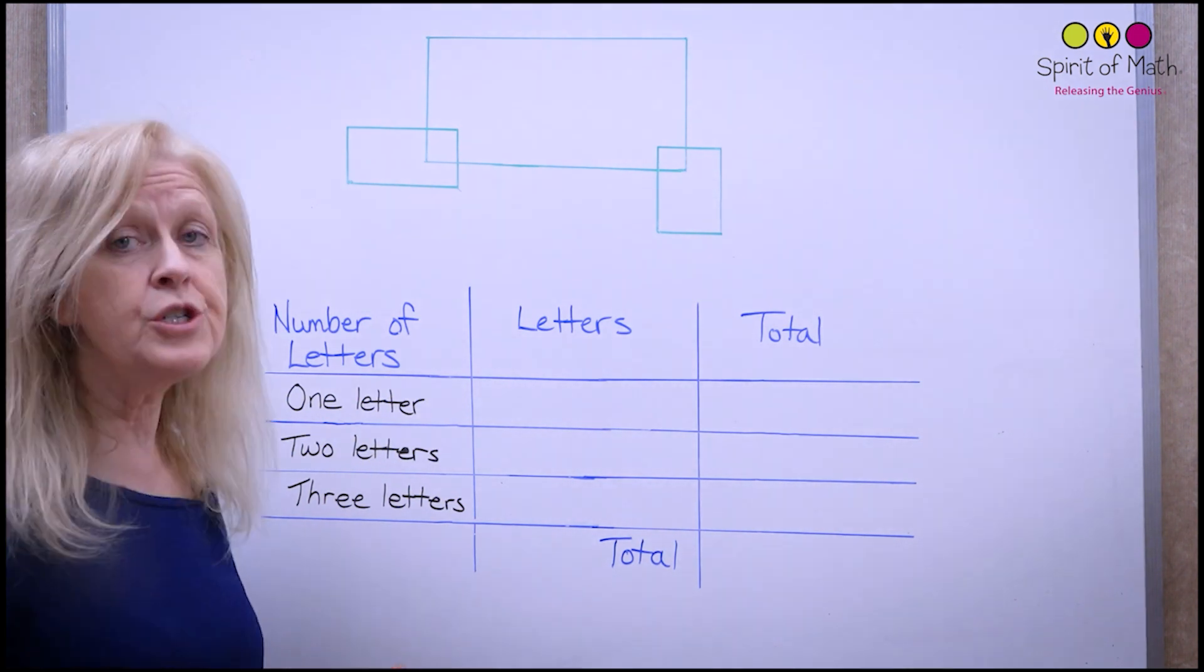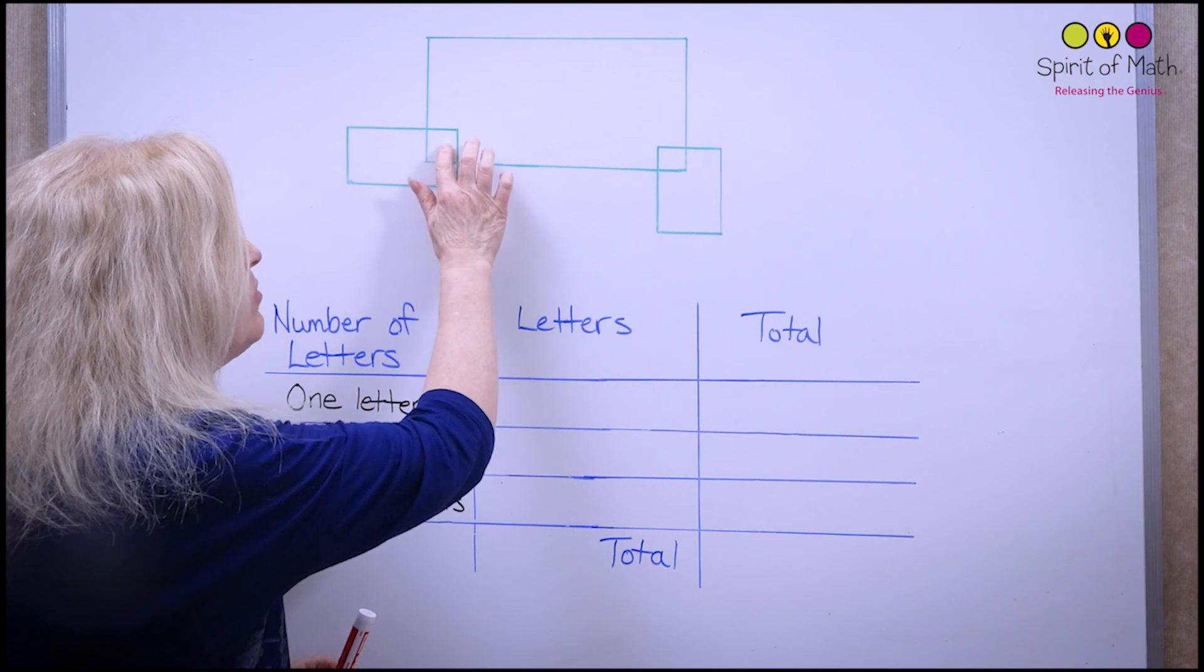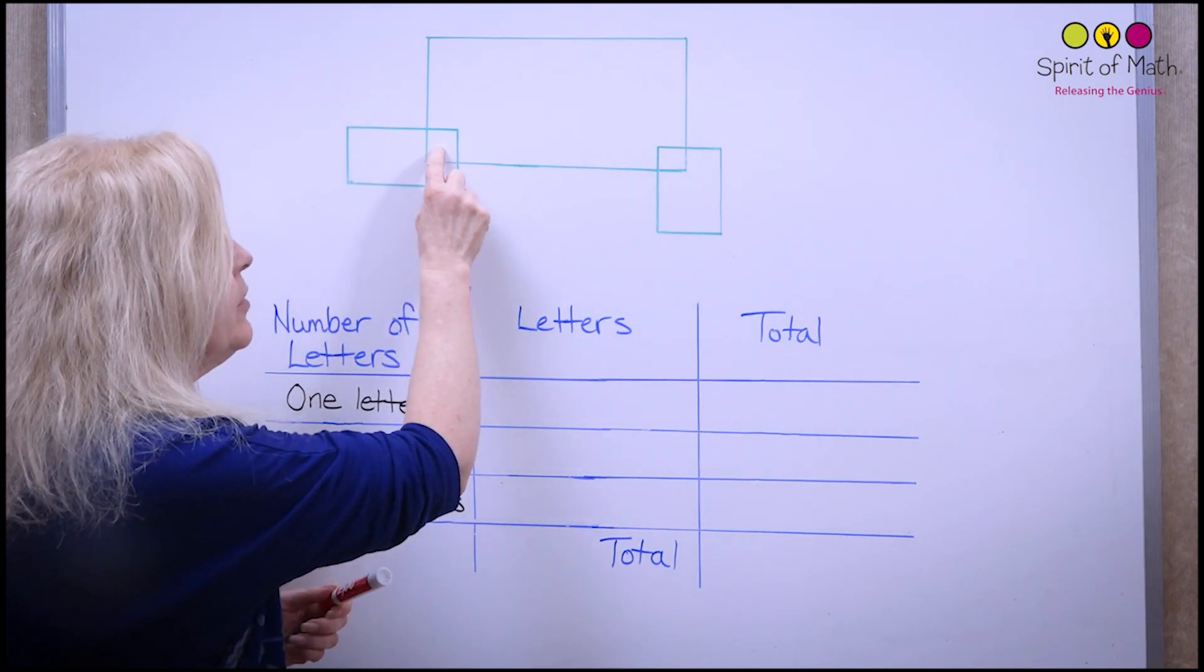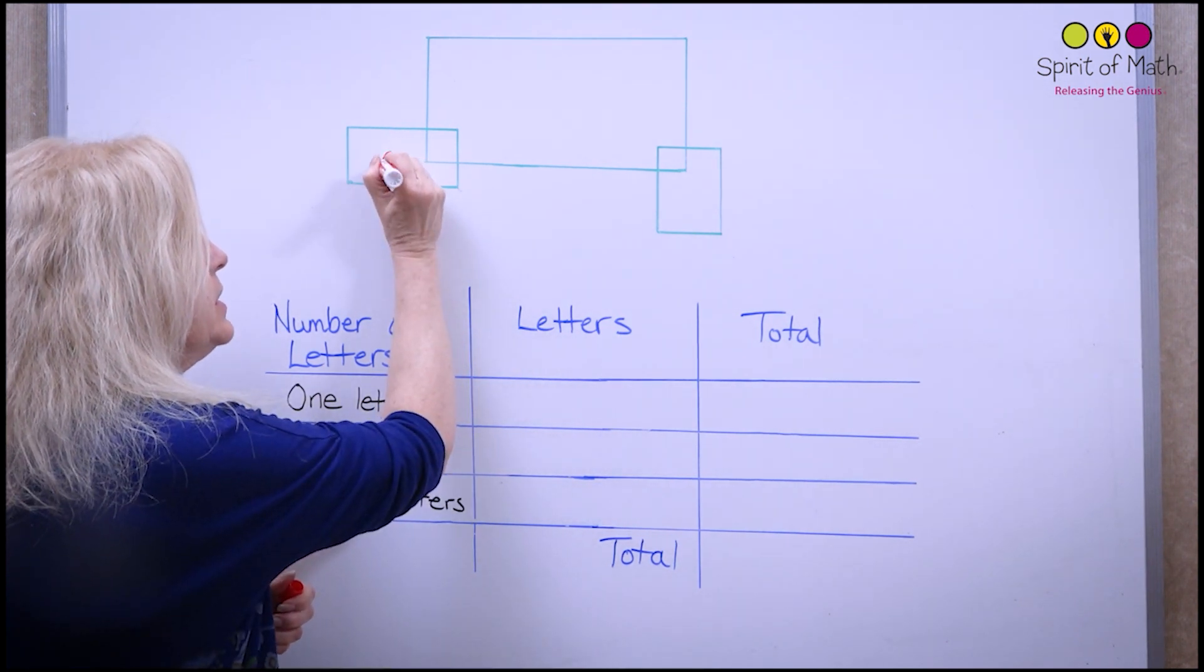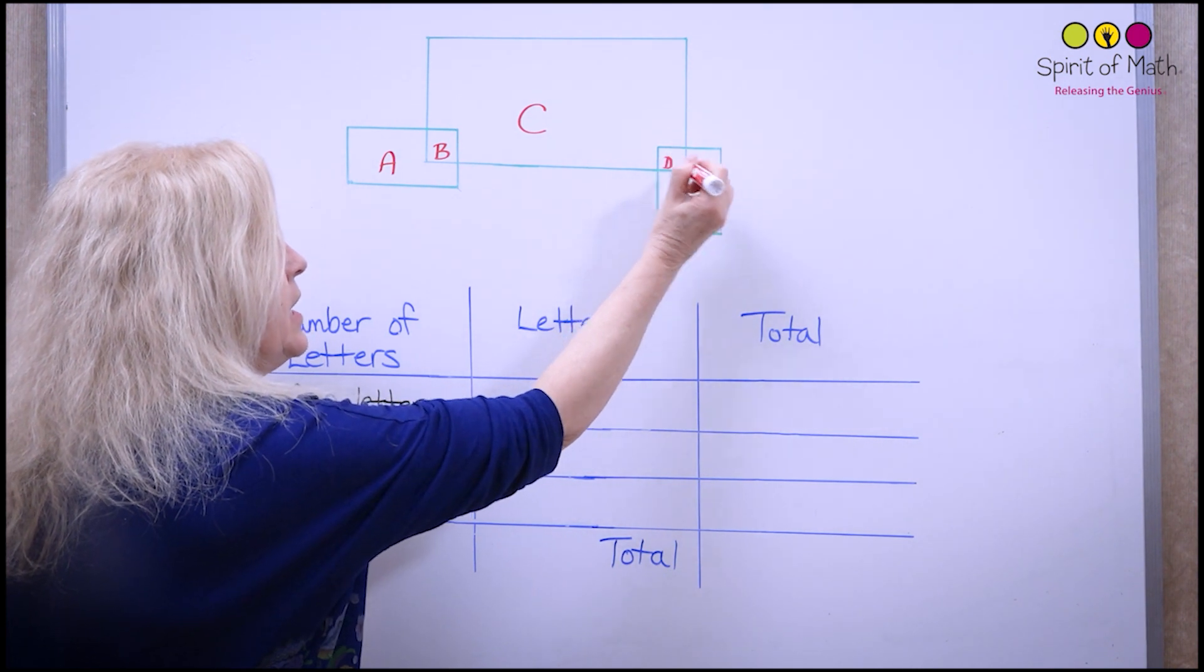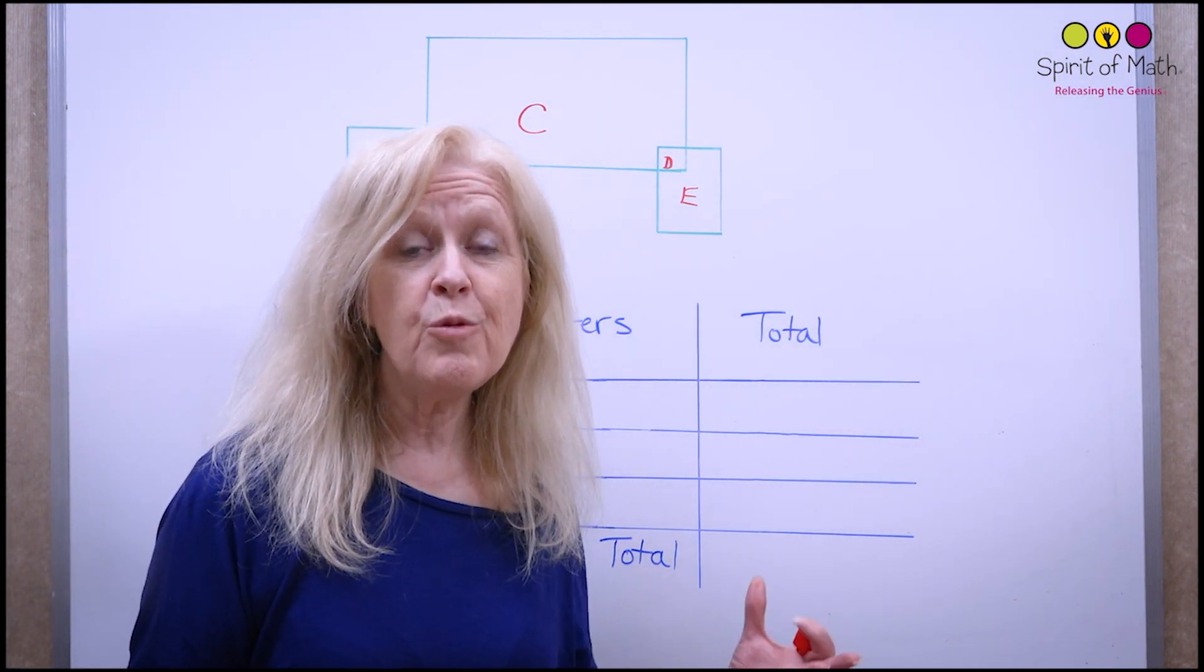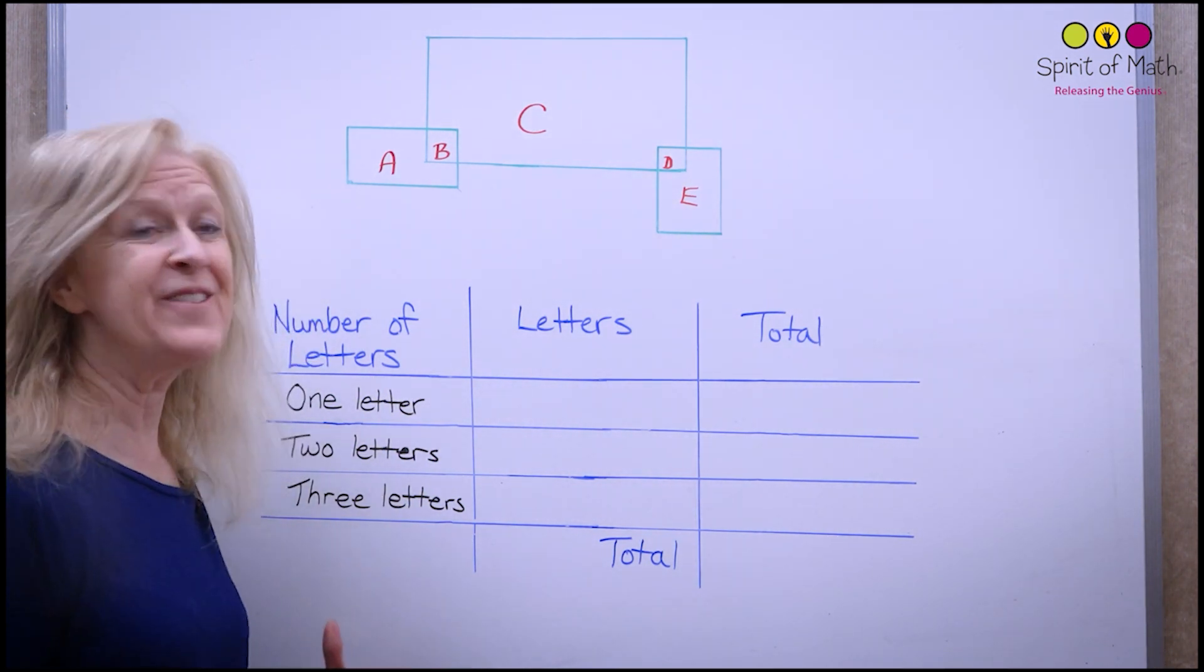Now the very first thing you want to do when you're doing this type of thing is because you can just sort of start counting, well there's one and here's another one, and you get all mixed up. So an easier way to do this is to label all the little regions, the spaces, and label them with letters. So let's label it with A and then we'll go to B and then C and then D and then E. Now this allows us to name all of the rectangles with letters and then we can count it up.